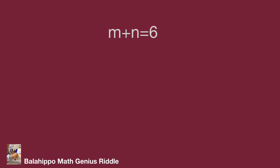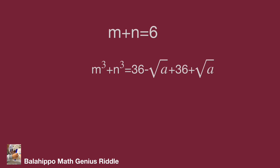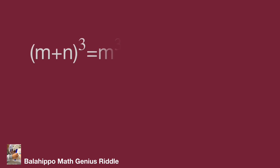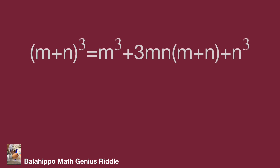As our thinking in the beginning, try to utilize the plus a squared and minus a squared. So m cubed plus n cubed equals 36 minus a squared plus 36 plus a squared, which equals 72. Now I'm going to generate more information for m and n. I use the identity: quantity m plus n cubed equals m cubed plus 3mn times quantity m plus n plus n cubed.